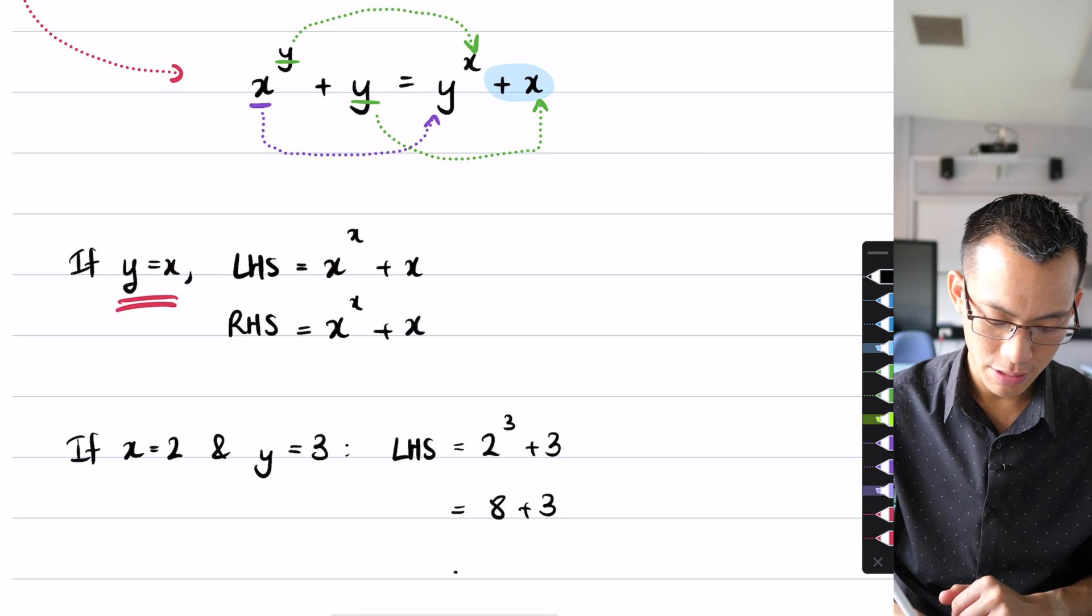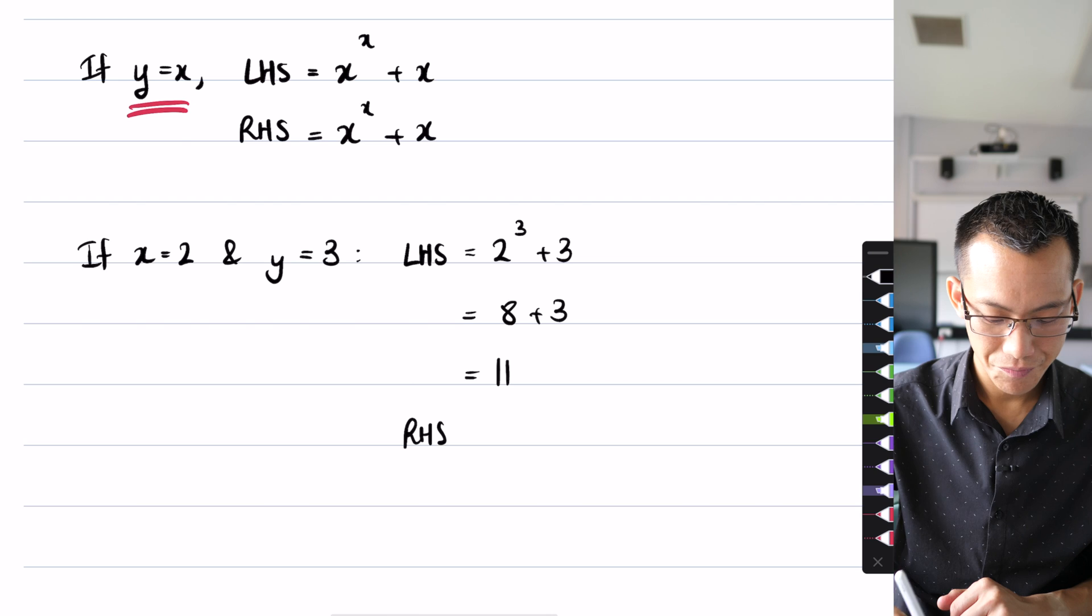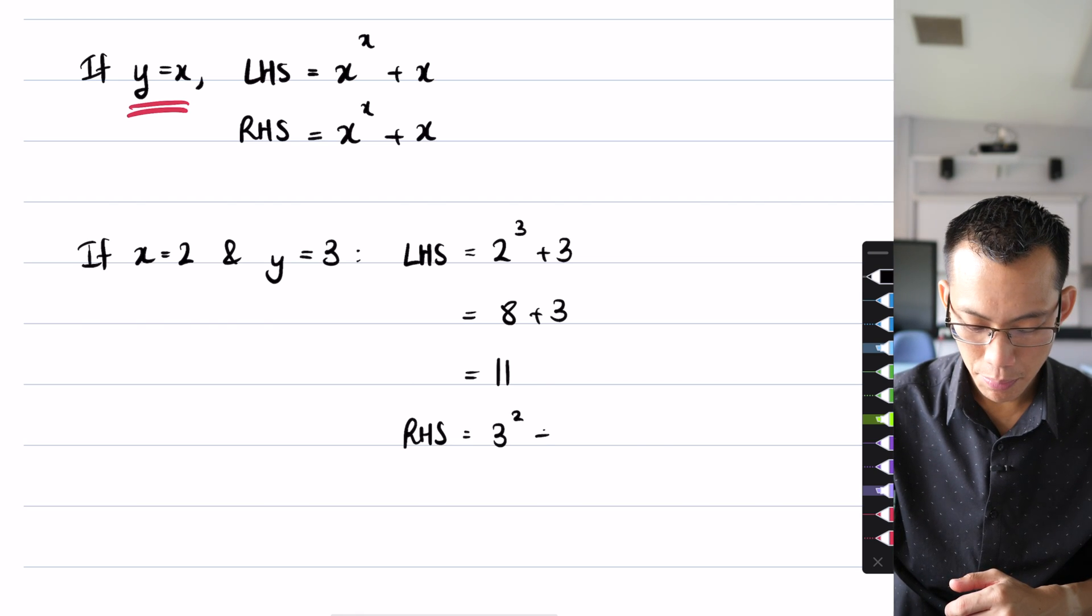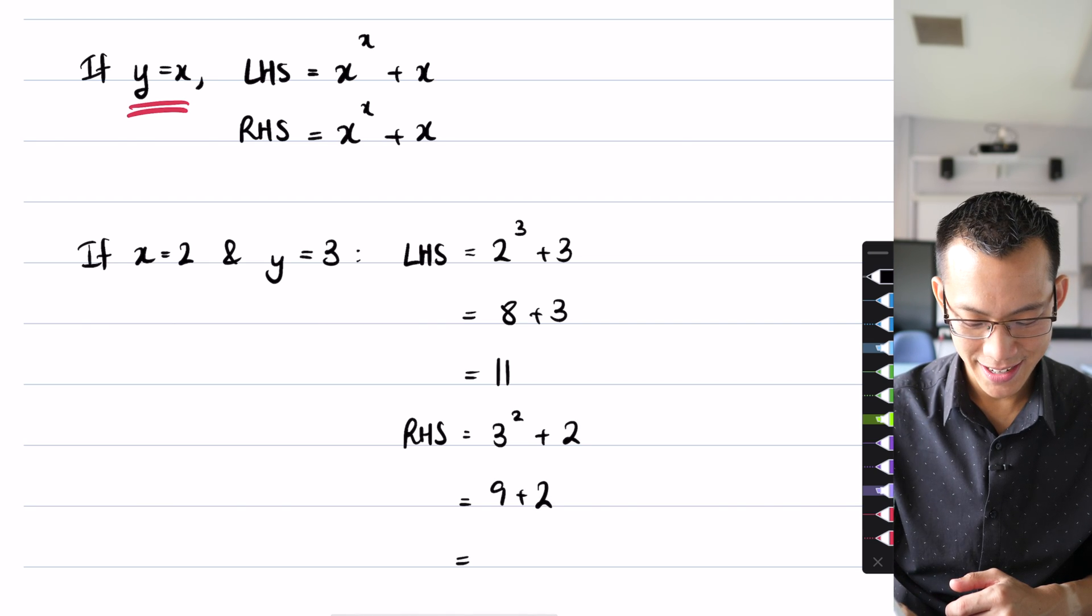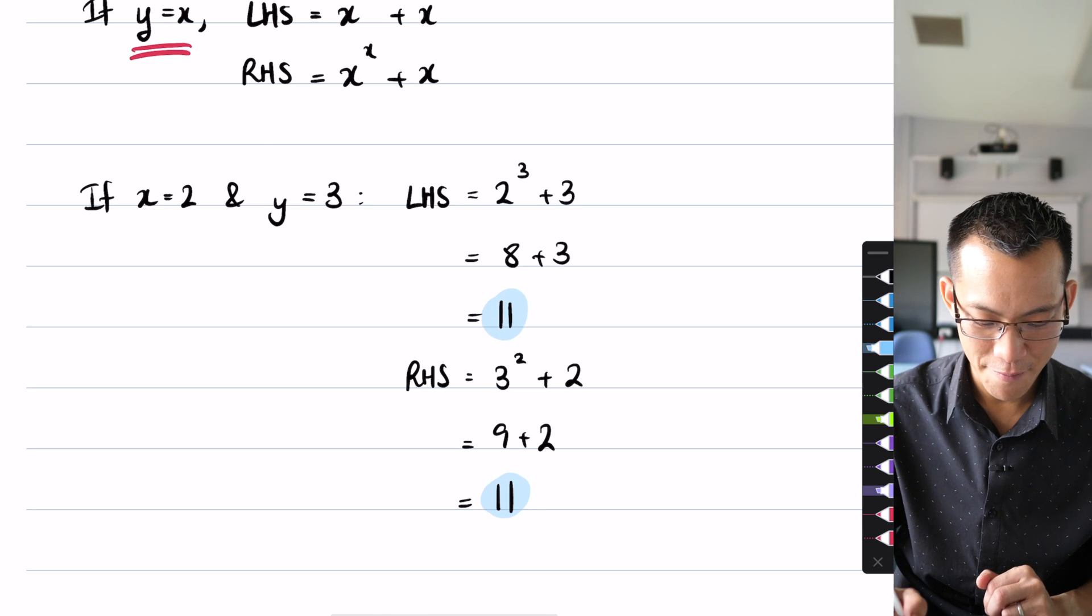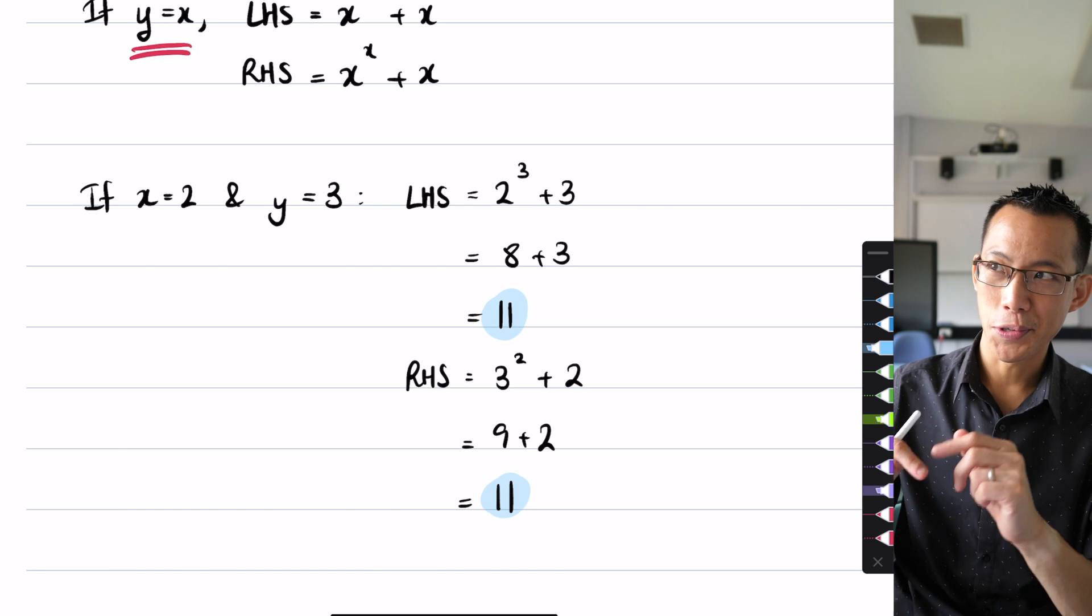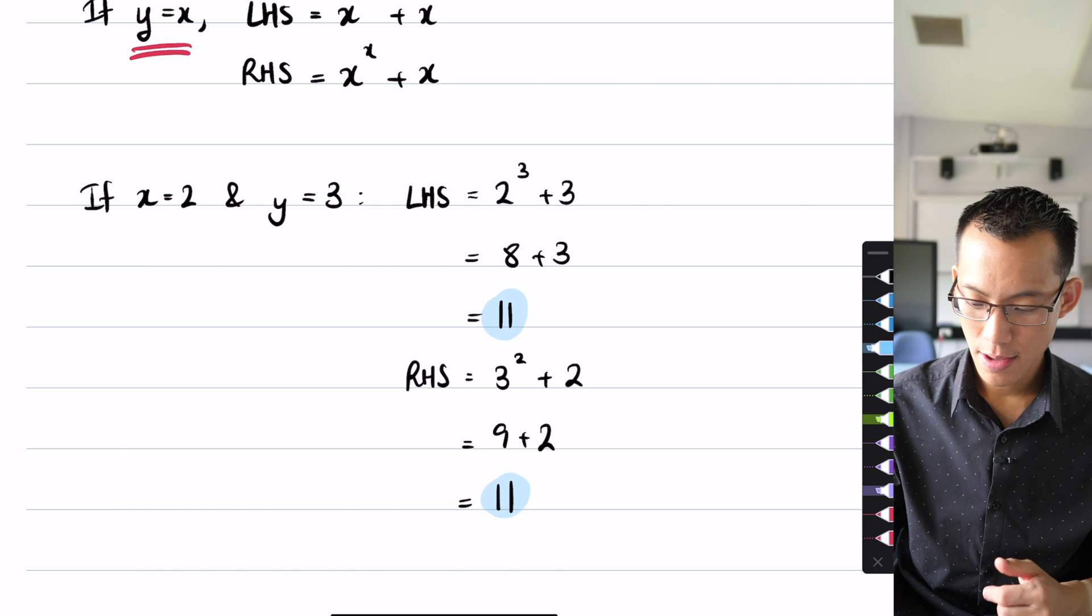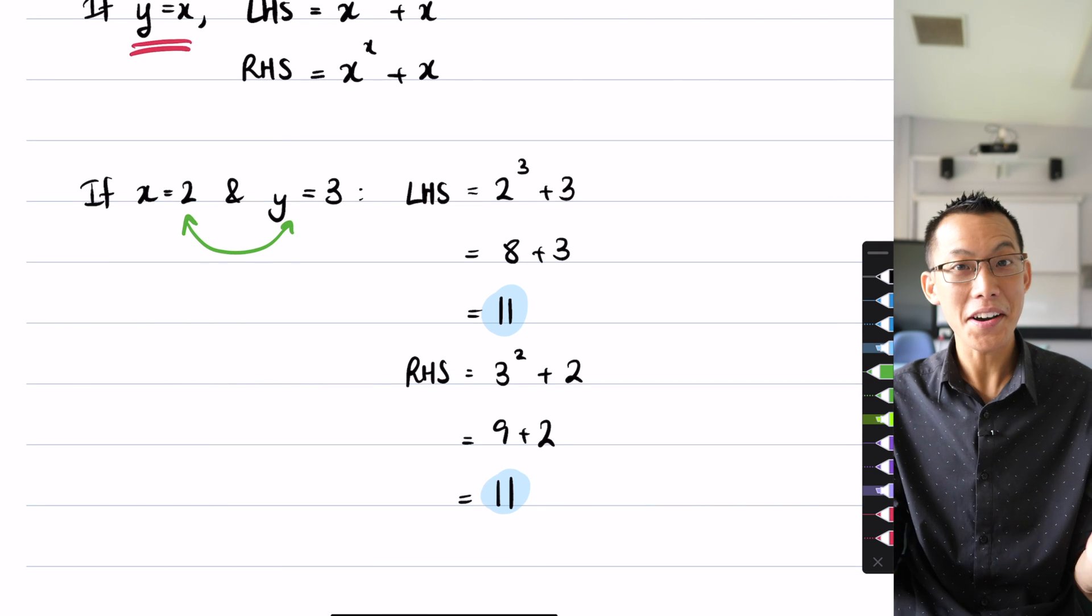Then when you try out the right hand side we're switching everything around, so it's going to be three squared plus two. That's nine plus two, which again is equal to 11. So I've got a solution. I've matched the left and the right hand side. So x equals two, y equals three, or again I think we would treat it as the same solution if you were to swap around your x and y values there. It works.